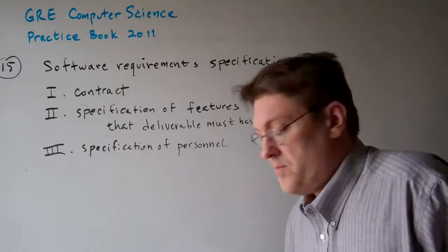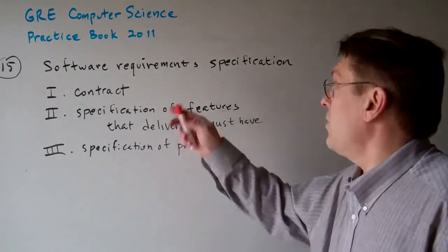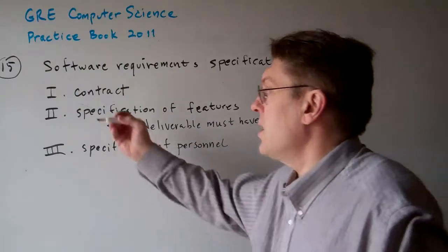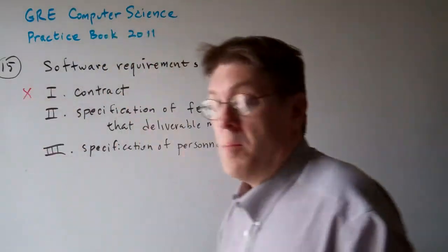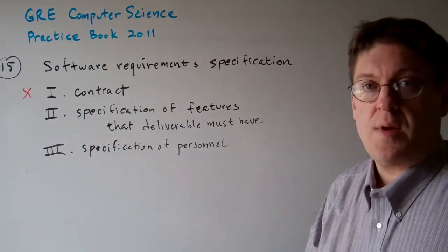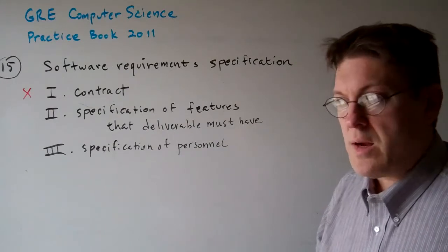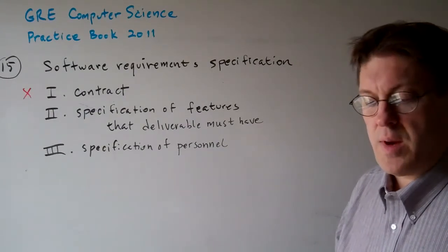Basic definition. Software requirements specification is not a contract. It might be used as a contract someday, but by itself it's not a contract. It doesn't have any legal bearing.